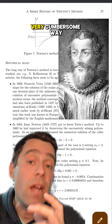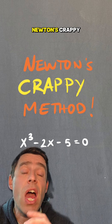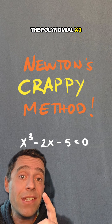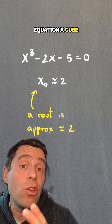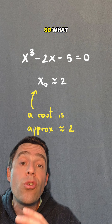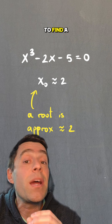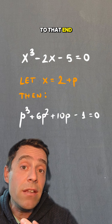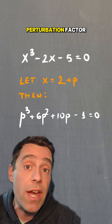He perturbs a nearby solution by a linear amount each time, but in a very cumbersome way. Let me explain what Newton actually does. Let's apply Newton's crappy version of Newton's method to find a root of the polynomial x³ − 2x − 5. The equation x³ − 2x − 5 = 0 has a root near x = 2, so we perturb that 2 by a linear factor to find a closer solution.